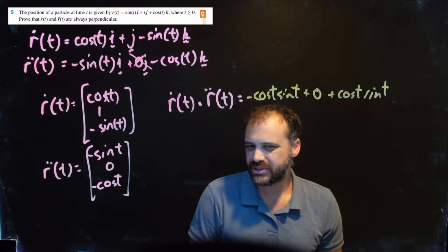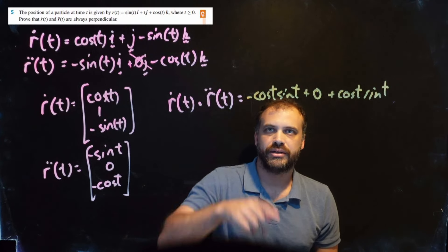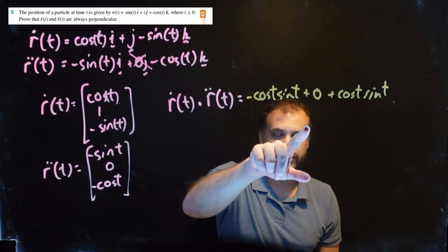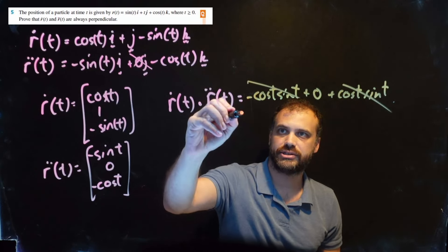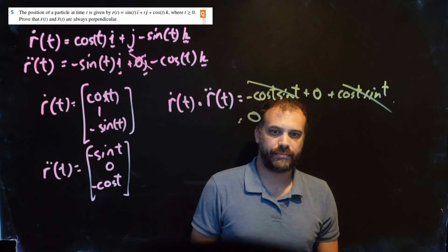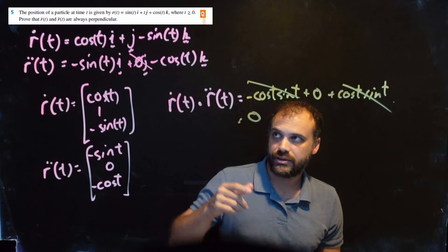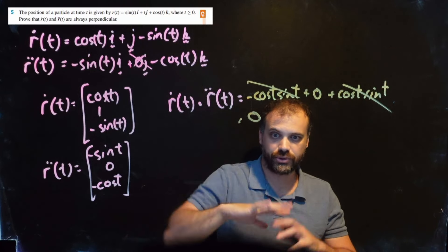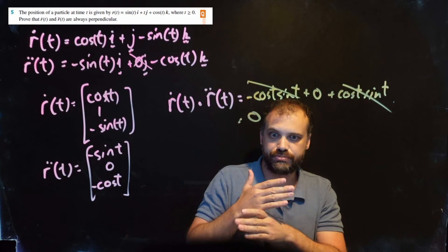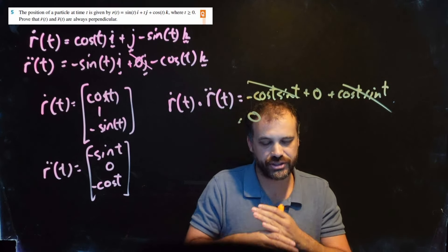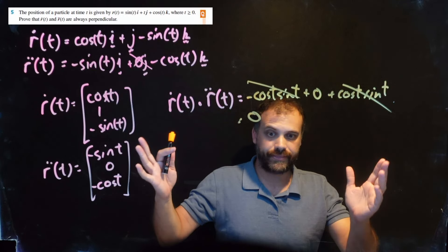It felt like it was going to be really difficult with all the cosines and sines, but negative cos(t)sin(t) plus cos(t)sin(t) cancel each other out. Magically, it doesn't matter what the t value is - these two vectors will always be perpendicular to each other. The velocity and acceleration of this particle will always be at right angles.